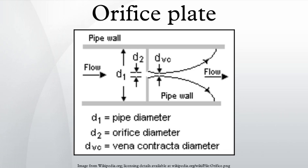In these situations multiple tappings can be used, arranged circumferentially around the pipe and joined by a piezometer ring, or annular slots running completely round the internal circumference of the orifice carrier.